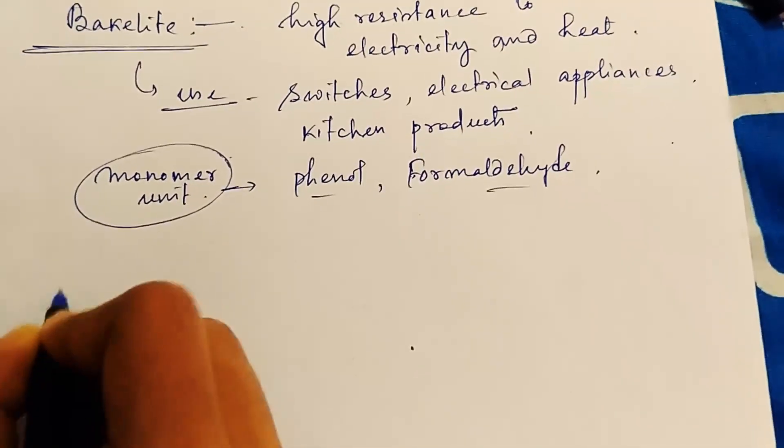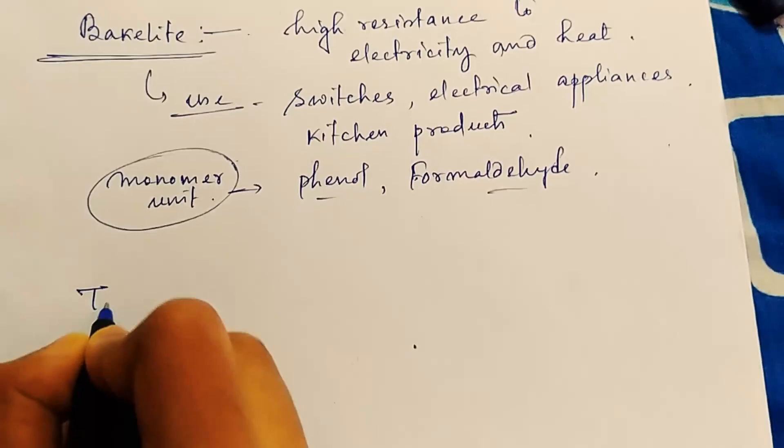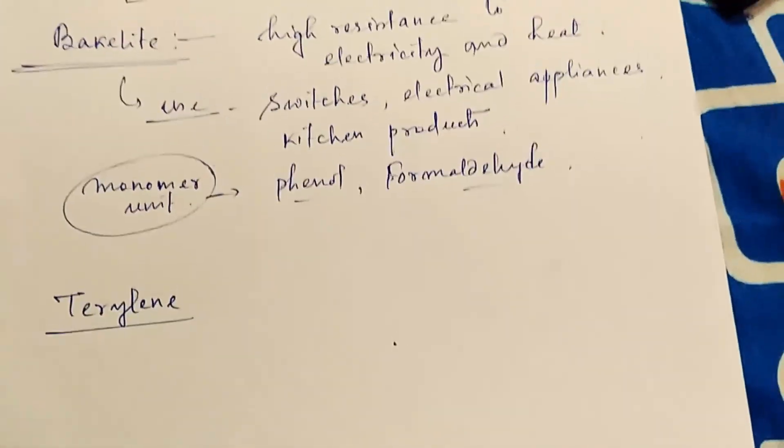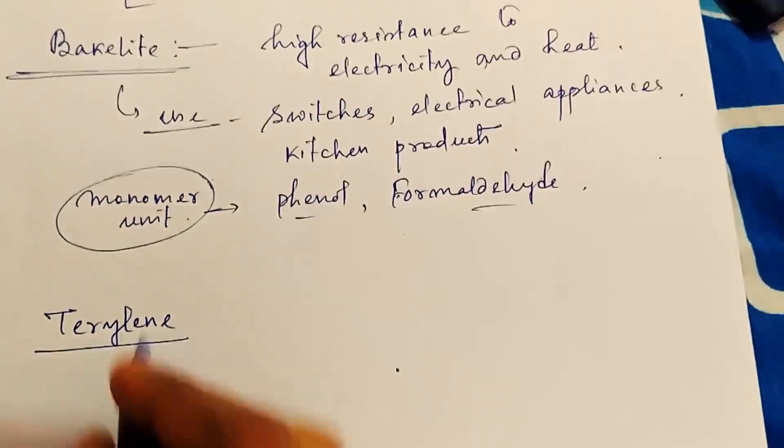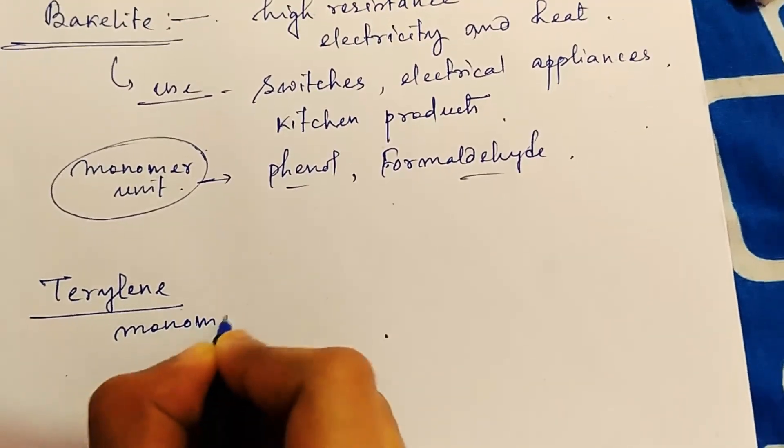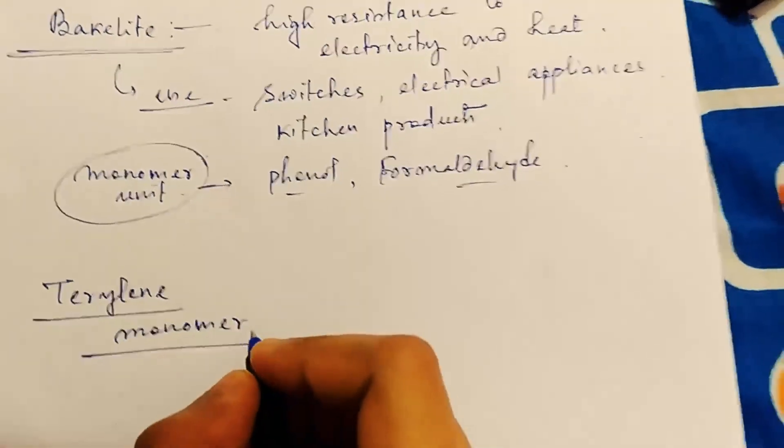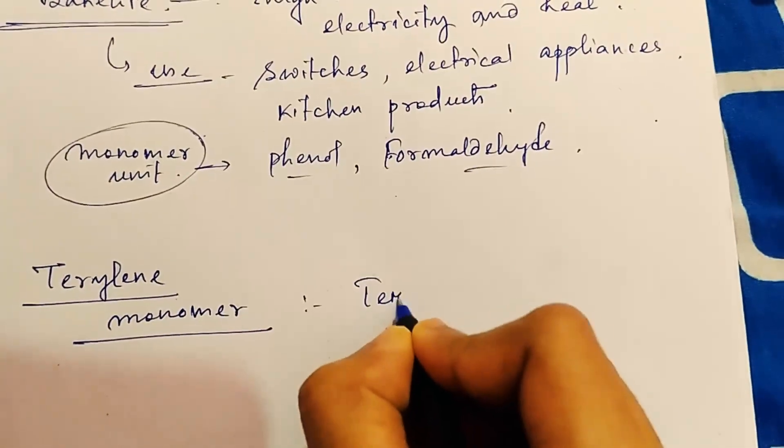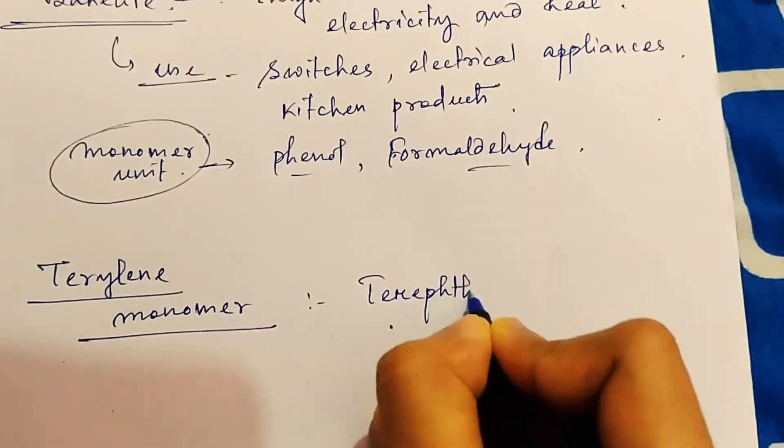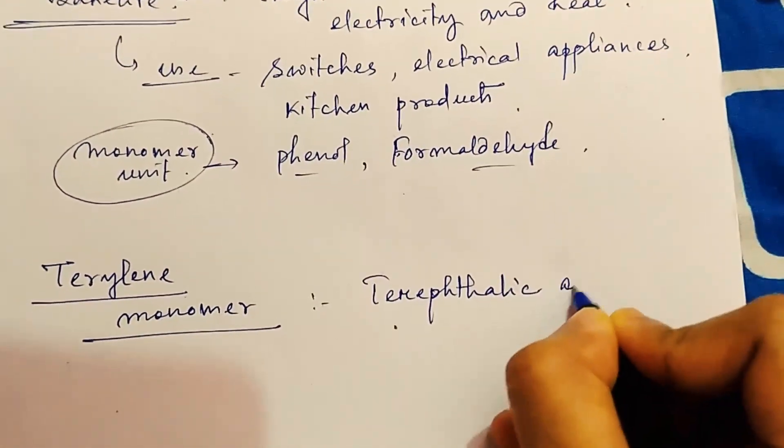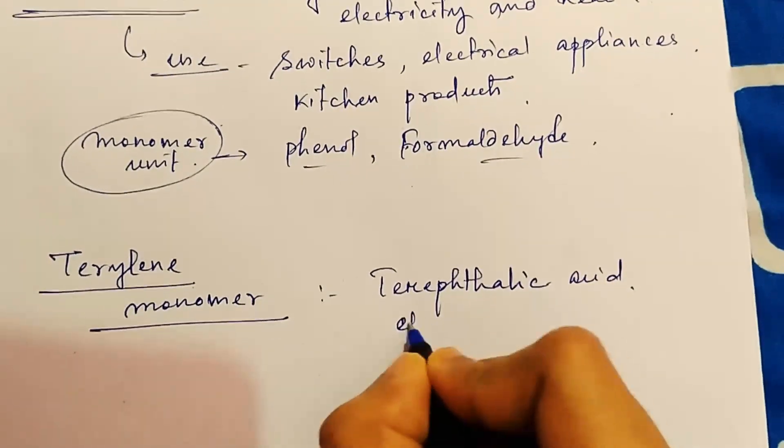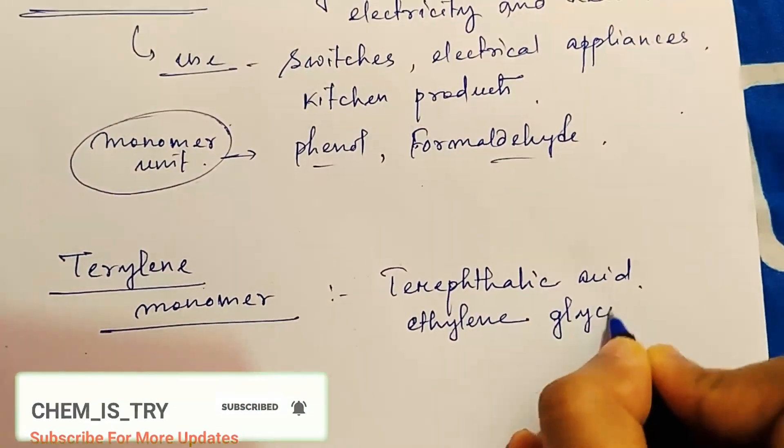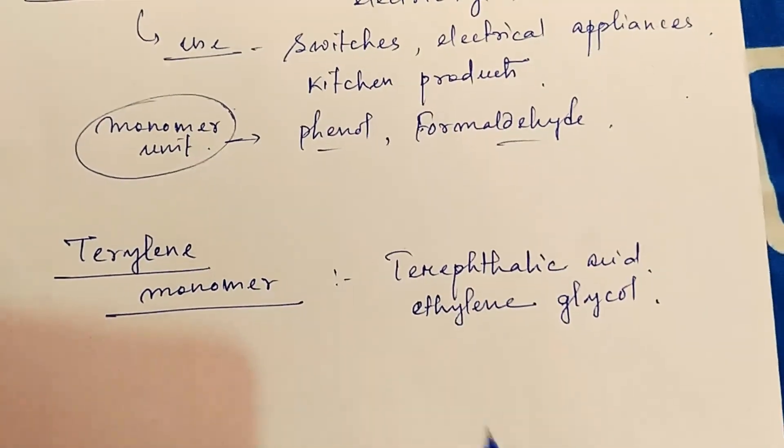And the another synthetic polymer is terylene. Now the monomer unit of terylene is, what are the monomer units? Two monomer units. One is terephthalic acid and another one is ethylene glycol, two monomer units are here.